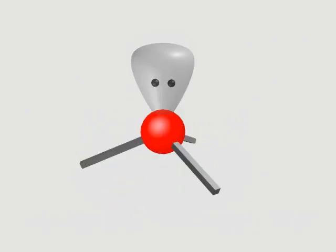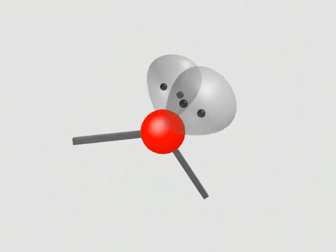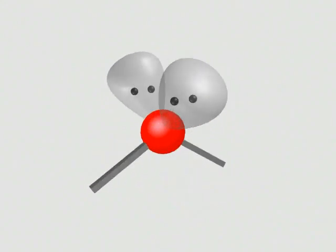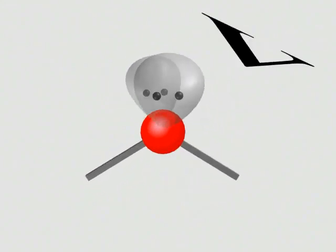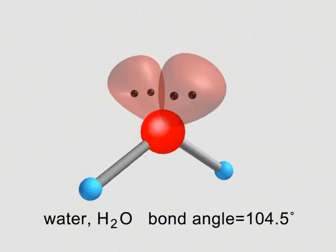When two of the four groups are lone pairs, the molecule has a bent, or V-shape. Two lone pairs exert greater repulsions than one, so the bond angle is reduced even further. Water, for example, has a bond angle of only 104.5 degrees.